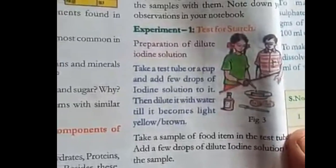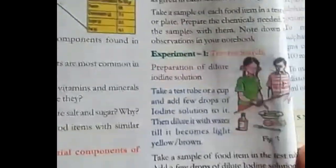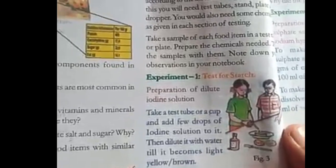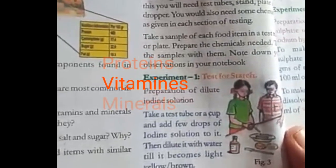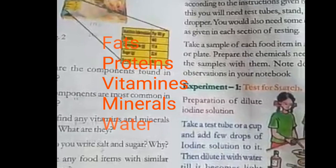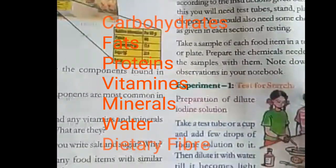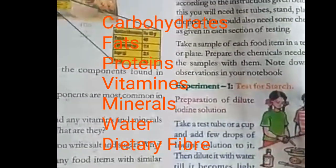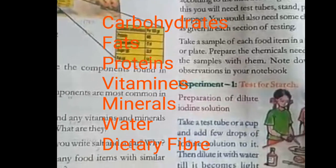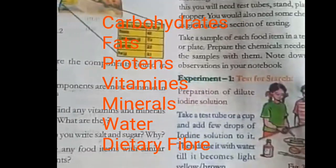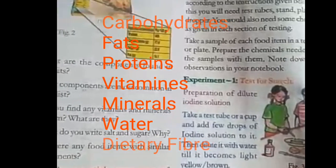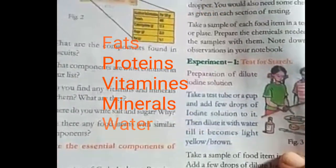Students, let us summarize what we have learned. The food components are carbohydrates, fats, proteins, vitamins, minerals, water, and dietary fibers. These are essential for body growth and development. We will meet again in the next class.